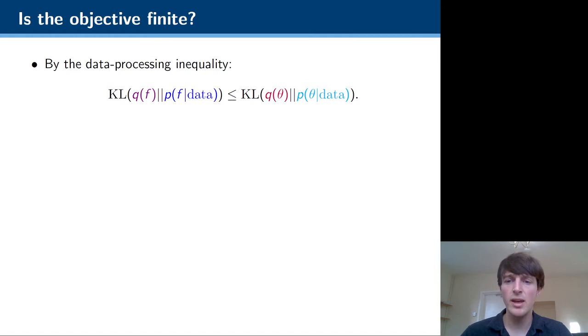So if the objective function is infinite, it's a bit hard to say we're doing variational inference, because we can't really be minimizing a KL divergence which is always infinite. So if you apply the data processing inequality, then you can actually upper bound this KL divergence in function space by the KL divergence in weight space, if all the distributions have the same parameterization.